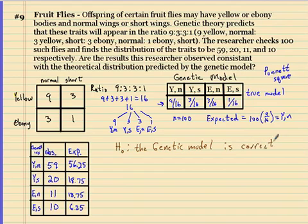It's always better to write these nulls in words, in the alternatives. The genetic model is incorrect.